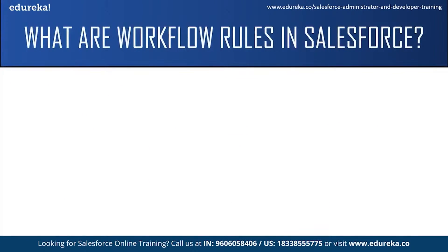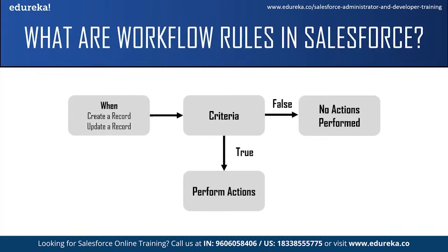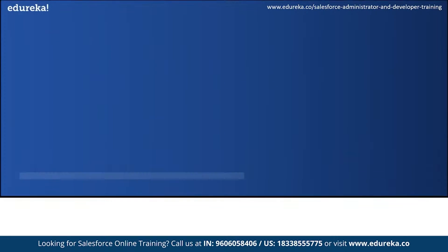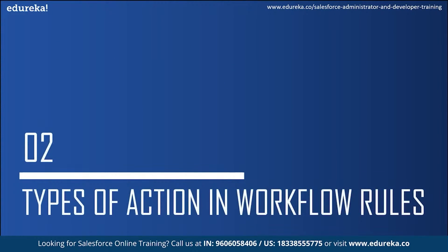Criteria is basically the condition that causes the workflow rule to run. Only if the condition is true are the actions automatically performed. If the condition is false, then the workflow rule does not apply. Actions are automatic tasks which are performed after the criteria is met, or when the condition is true.